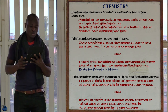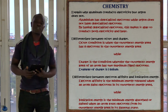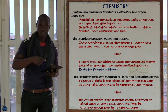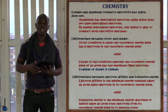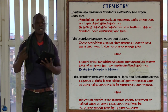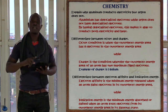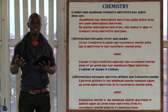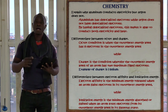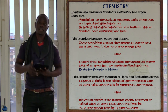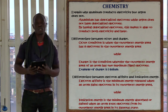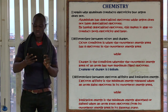Differentiate between electron affinity and ionization energy. Electron affinity is the energy released (given off) when an atom gains an electron in its gaseous state in order to become stable. Ionization energy is the minimum energy absorbed when an atom loses an electron in its gaseous state.